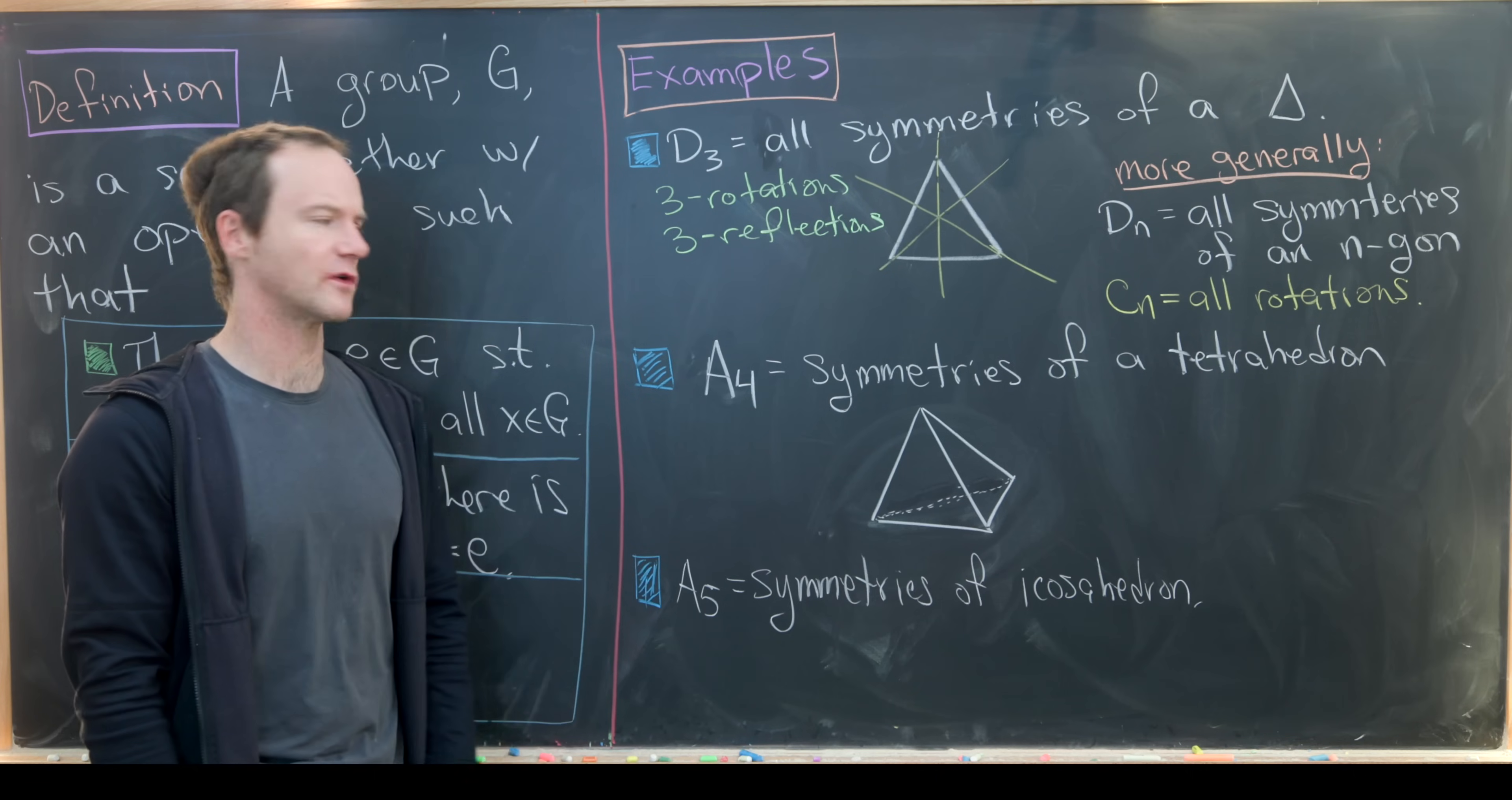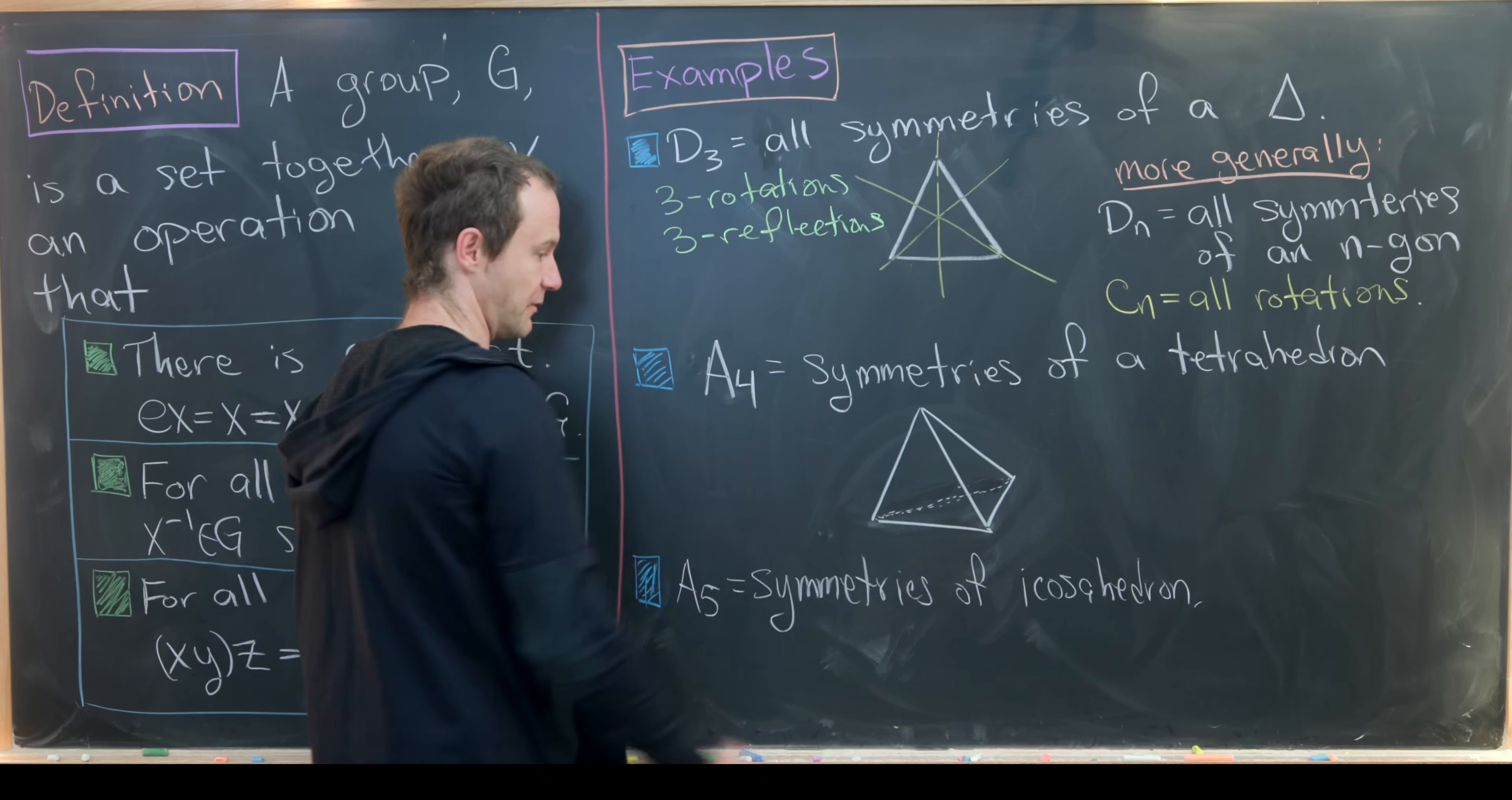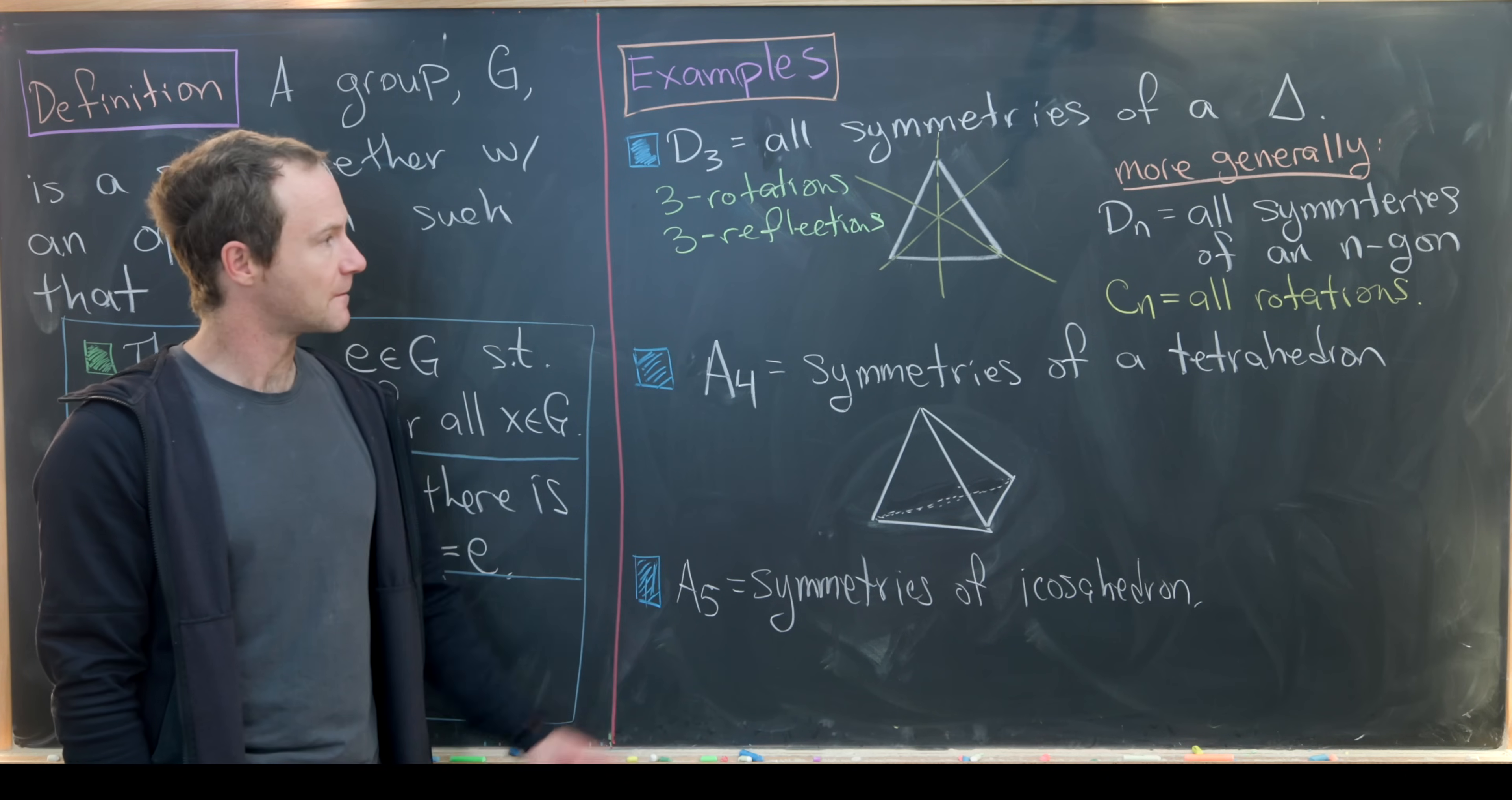Here are two more that are pretty interesting. A4, which is the alternating group on four letters, is the symmetries of a tetrahedron. Let's recall a tetrahedron is a three-dimensional object made from four equilateral triangles. And then A5 is the symmetries of an icosahedron. This is a 20-sided solid. A5 is an alternating group just like A4 is.